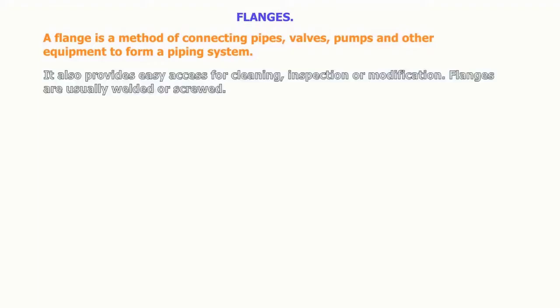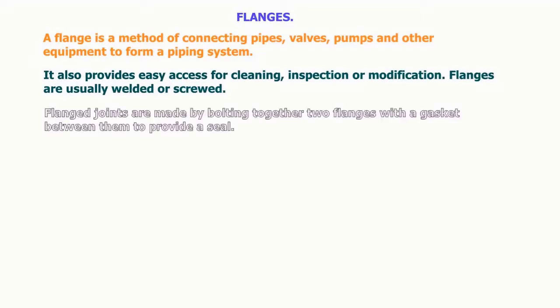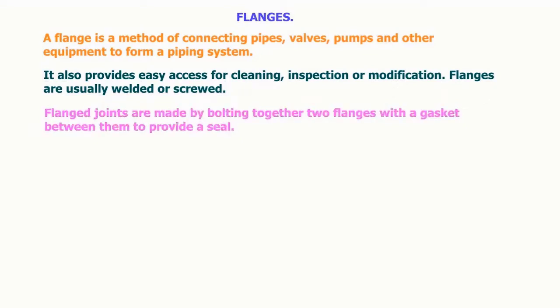A flange is a method of connecting pipes, valves, pumps, and other equipment to form a piping system. It also provides easy access for cleaning, inspection, or modification. Flanges are usually welded or screwed. Flange joints are made by bolting together two flanges with a gasket between them to provide a seal. The most used flange types in petro and chemical industry are in the following list.